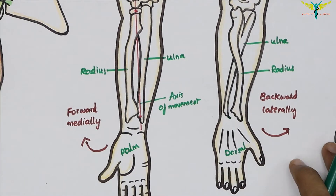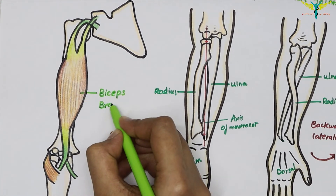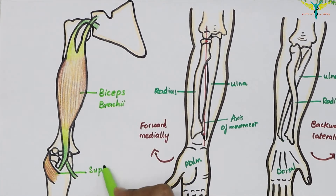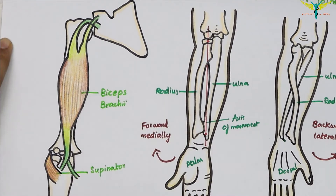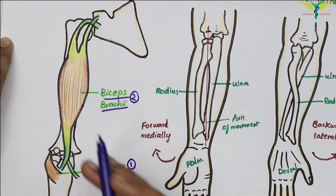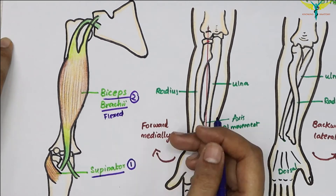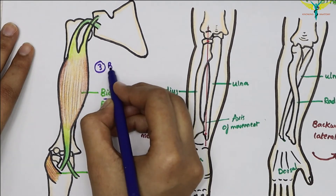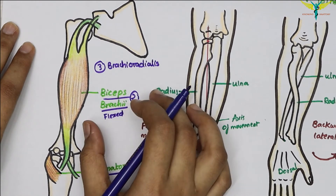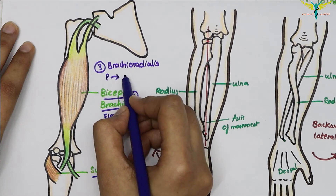Now let's learn about the muscles involved in supination. The muscles helpful in supination are: first, the supinator muscle; second, the biceps brachii, which supinates the forearm while the elbow is flexed; and third, the brachioradialis, which supinates the pronated forearm to the mid-prone position.